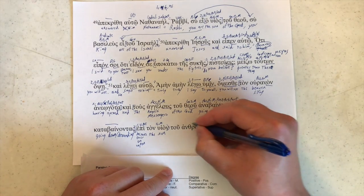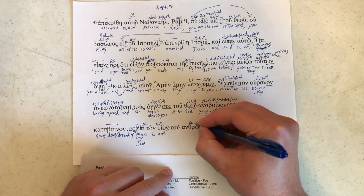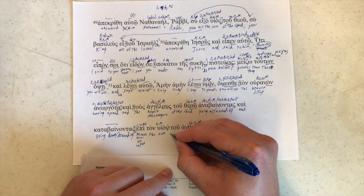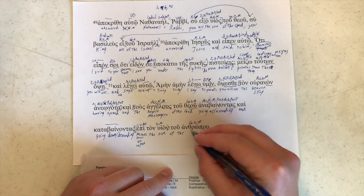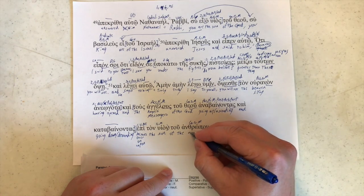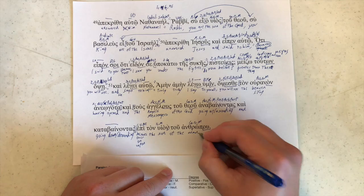But let's go ahead and translate tou anthrōpou first. We've got omicron, upsilon here. So genitive, singular, masculine. Of the, and this means, of course, man. Period.